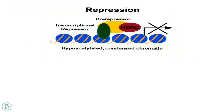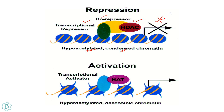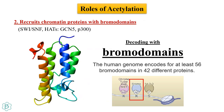When histone deacetylase is present along with transcriptional repressor and co-repressor, you have hypoacetylated histones and condensed chromatin, so transcription will not happen. But when histone acetyltransferase acetylates the histones, it recruits transcriptional activators and transcription can occur. Acetylation recruits chromatin proteins with bromodomains — for example, SWI/SNF, HATs like GCN5 and p300. The human genome encodes at least 56 bromodomains in 42 different proteins.